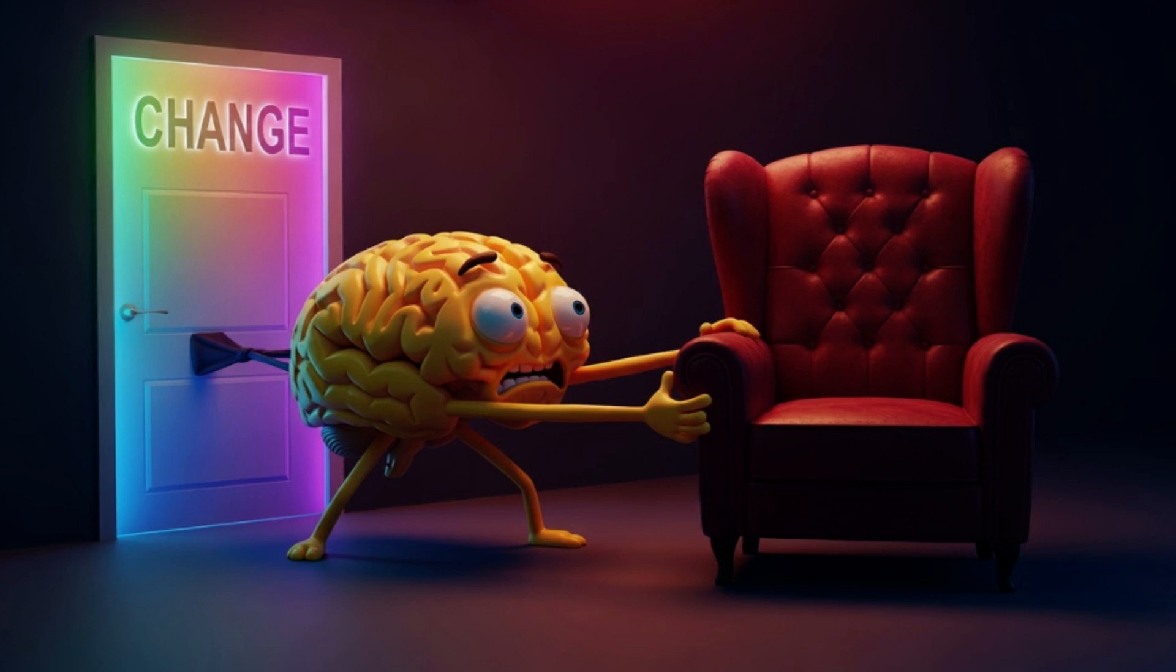Now, here's why that matters. The basal ganglia runs faster and stronger than your conscious decision-making brain. So when you're stressed or tired or distracted, the autopilot system wins. That is why you can find yourself halfway through a bag of chips before you've even made the decision to have chips.